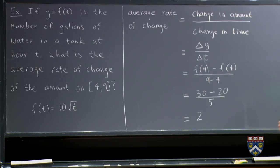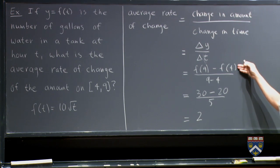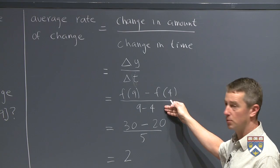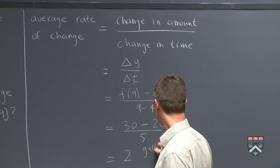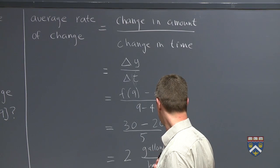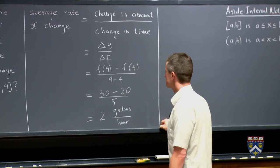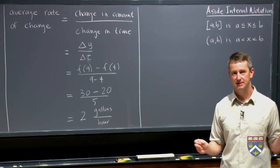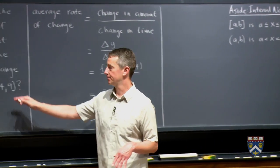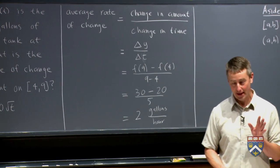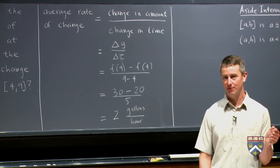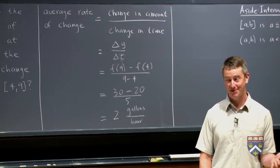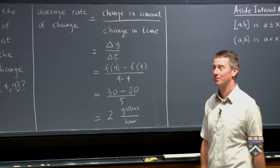And now we should ask ourselves what the units should be on this. The units in the numerator of this fraction were the amount of water. So that was in gallons. And down here was the time. So that was in hours. So this would be 2 gallons per hour. So that's the average rate of change over this entire interval from time 4 to time 9. Now calculus will be about finding the rate of change at any given moment. Like how fast was the amount changing exactly at time 5, for example. And by the time you've mastered calculus, you'll be able to answer that question. But we need to do a little bit of work before we can get to that.